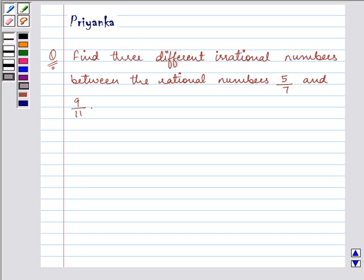Hi and how are you all today? I am Priyanka and let us do the following question which says find three different irrational numbers between the rational numbers 5 by 7 and 9 by 11.